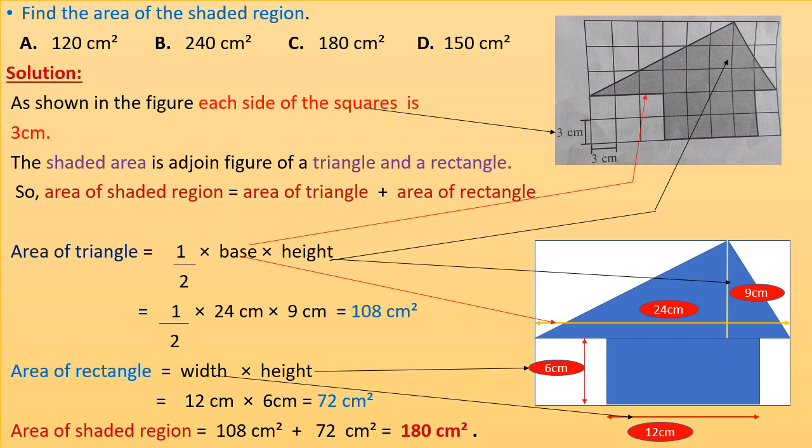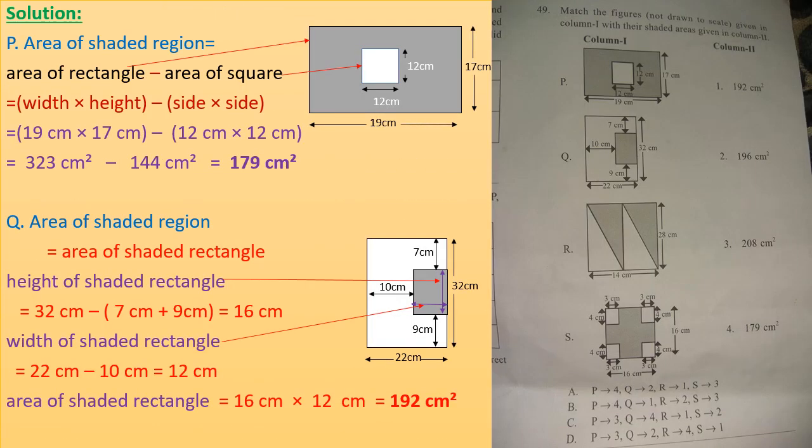There are 2 squares along the height of the rectangle, so height will be 2 into 3 equals 6 centimeters. Substituting these values, area of rectangle equals 12 cm into 6 cm equals 72 cm square. Therefore, area of shaded region equals 108 cm square plus 72 cm square equals 180 cm square. Correct option is C.